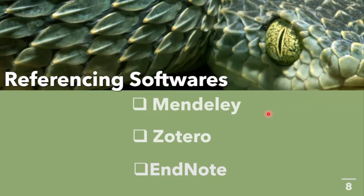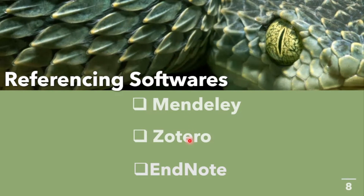These are some recommended referencing softwares. I love using Mendeley mainly because it is free and quite handy — if you get the Mendeley web importer and the Mendeley Word importer, you can reference your work easily. You can also use Zotero. Both Mendeley and Zotero are free apps you can download from the internet. EndNote, on the other hand, is not free — you need to purchase it for full access.